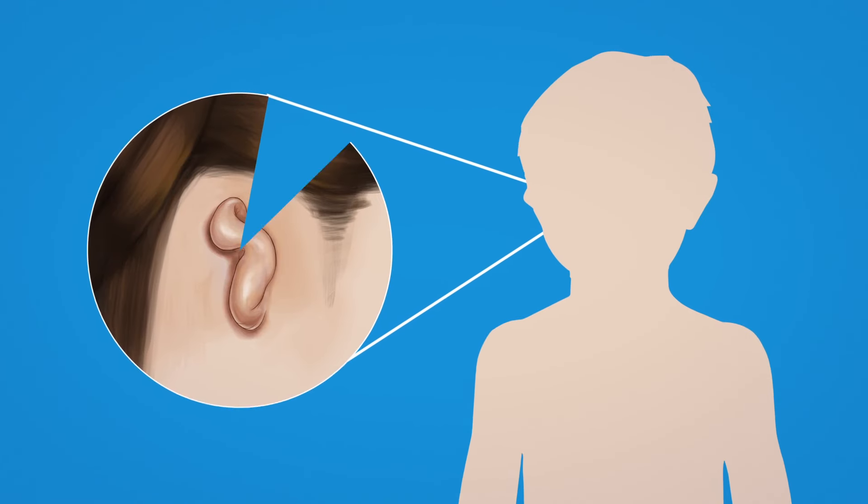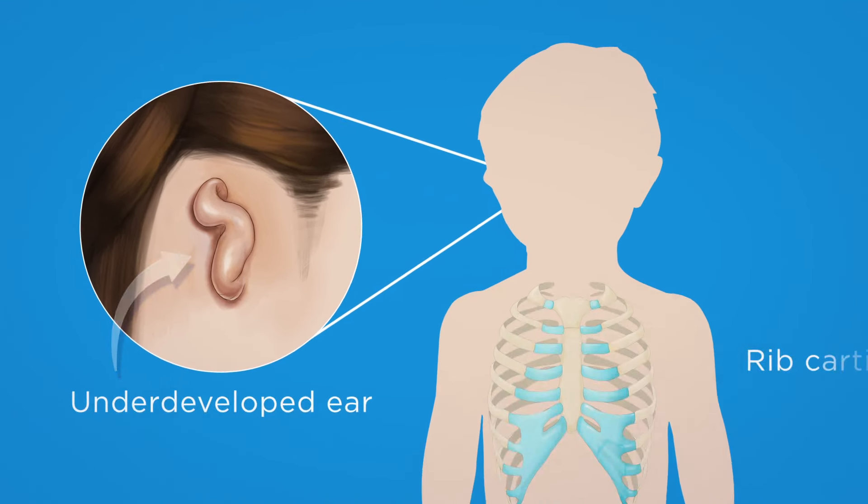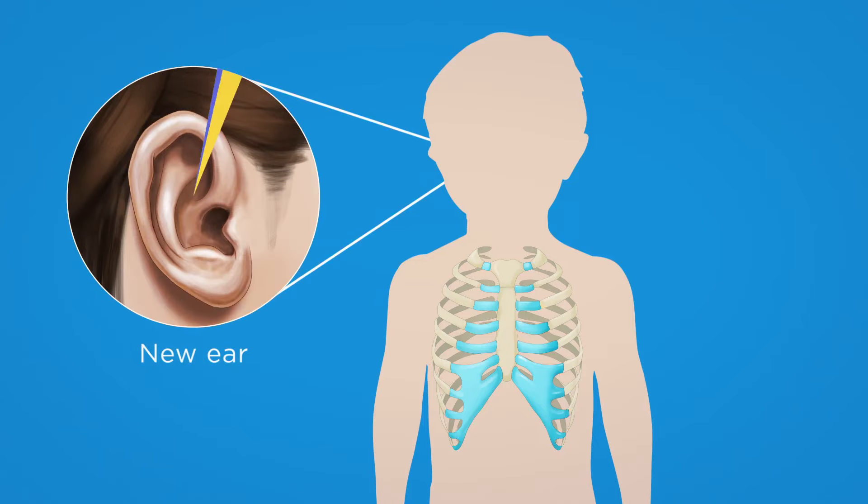Microtia is a condition where an ear is underdeveloped. To repair the ear, surgeons remove cartilage from the ribs and use it to form a new ear.